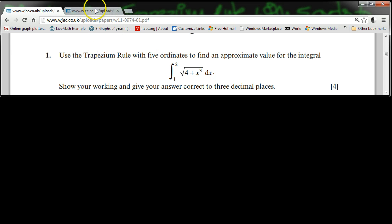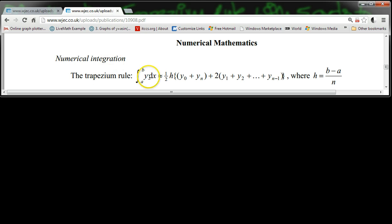So we need the trapezium rule. Let's click over to the formula booklet. Here's the trapezium rule here, the approximate integral of y dx between bounds a and b. It's h over 2 times by the first and last y-ordinate, y0 plus yn, plus 2 times all the y-ordinates in between, from y1 up to yn minus 1, where h is equal to b minus a over n.